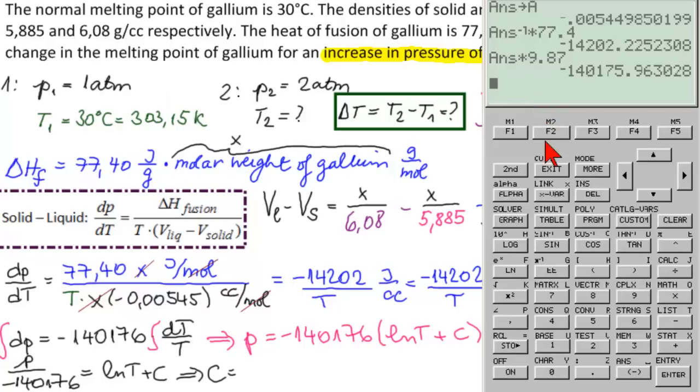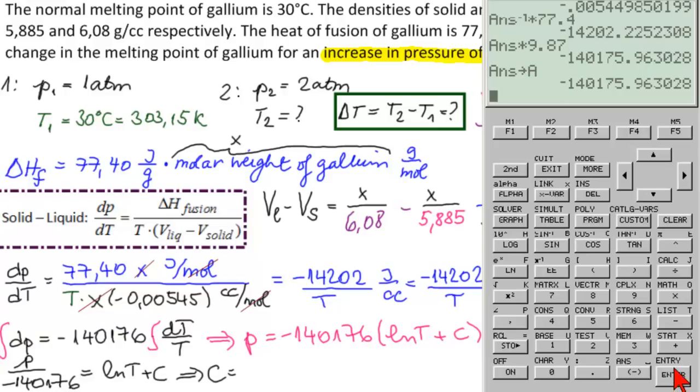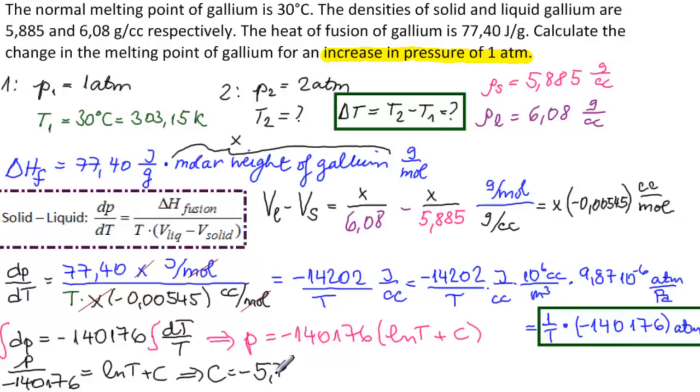Let's do that with our calculator. Let's put this in storage, let's put it in A again. So we will put it in A and we need 1 over that. Minus ln of 303.15. And we get that c equals minus 5.714.